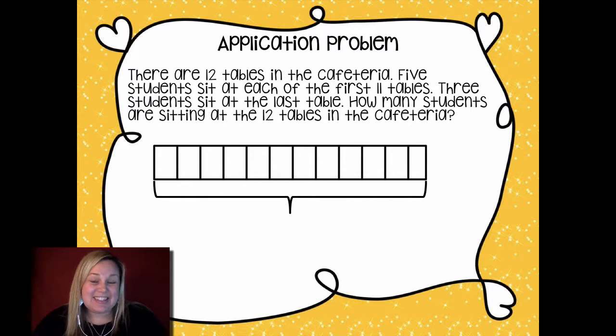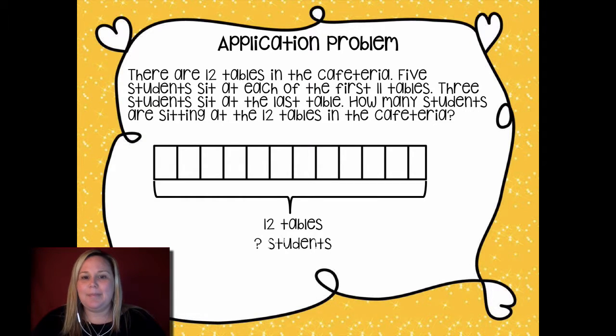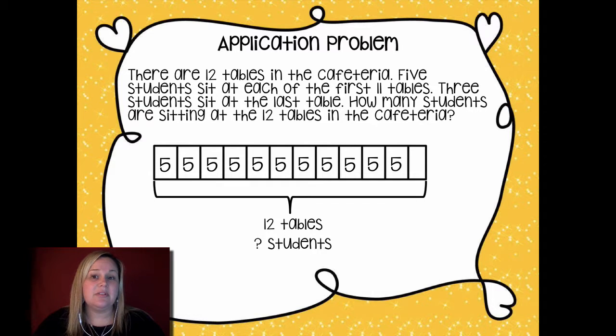Yeah, because three students sit at the last table. So five students sit at the first 11 tables and then the last one sits three students. So I want to kind of label this because this is really like a tape diagram. So out of all of these, it's 12 tables, but I don't know how many students. So now I need to go back and label this to help me figure it out. So at the first table there was five, second five, third, fourth, fifth, six, seventh, eighth, ninth, 10th, and 11th table. There was five students that sat at the first 11 tables. Now the last table only sat three. The 12th table sat three students. So that's how it's a little bit smaller in my picture, just a little bit. And I labeled it with three students.